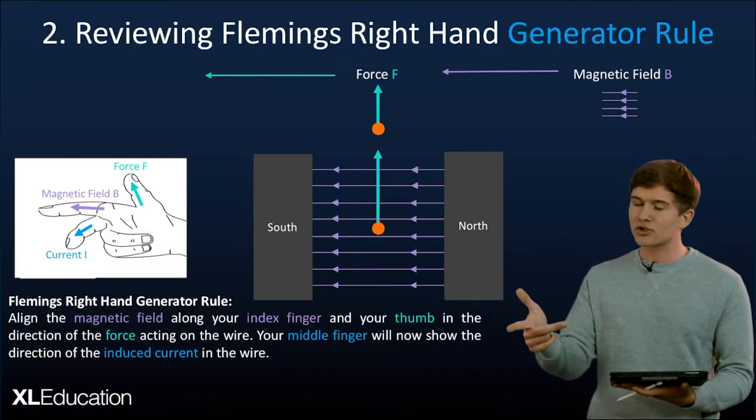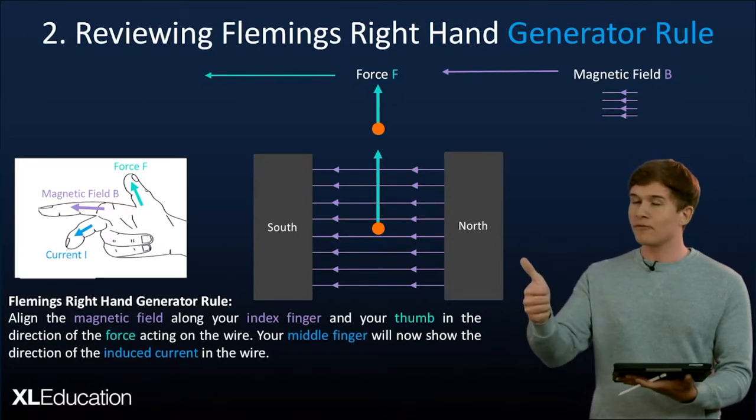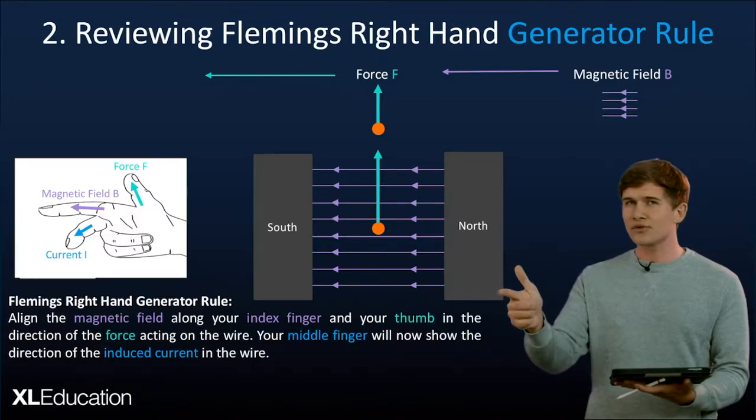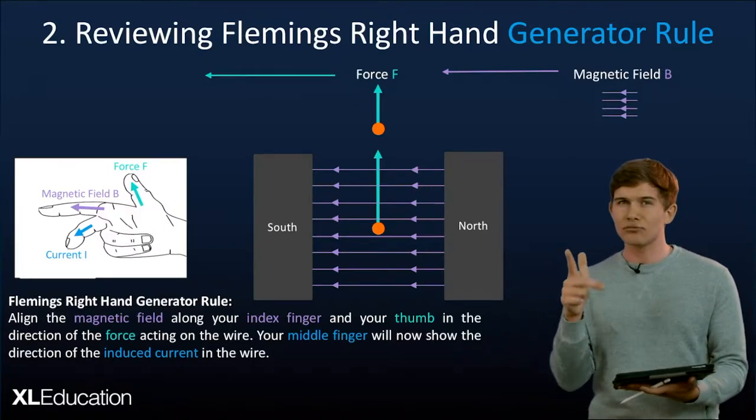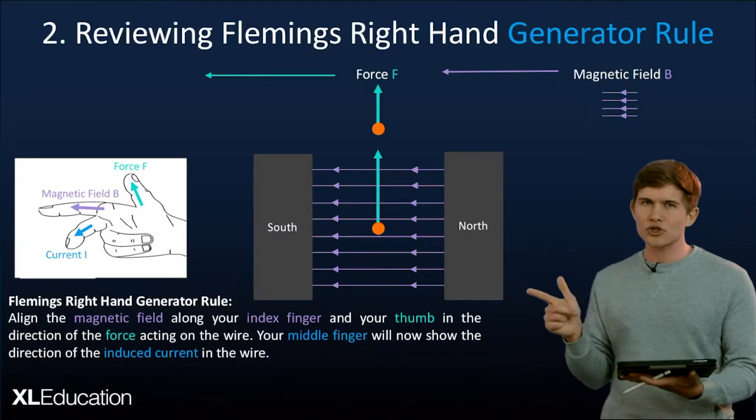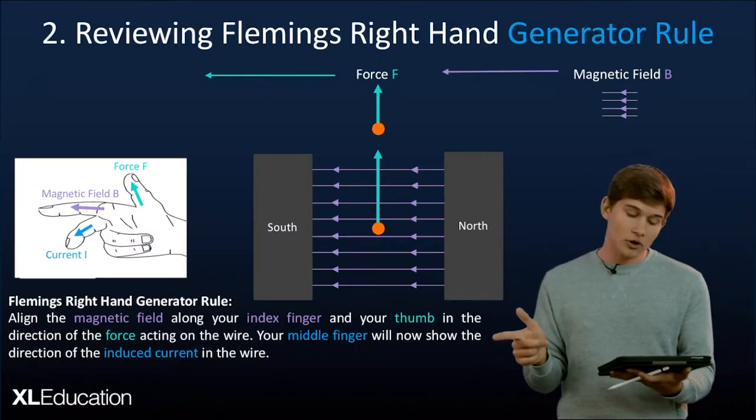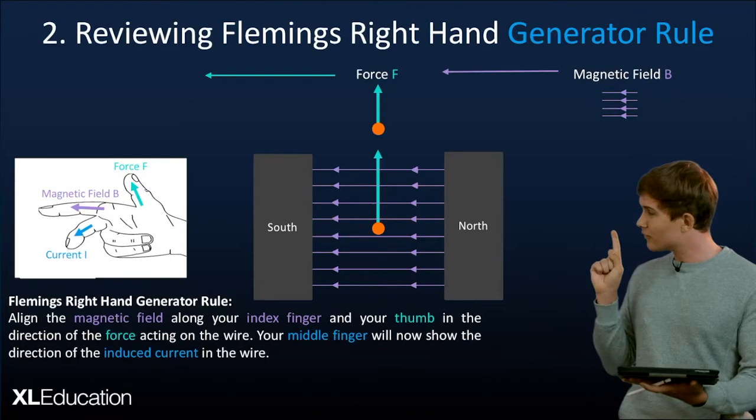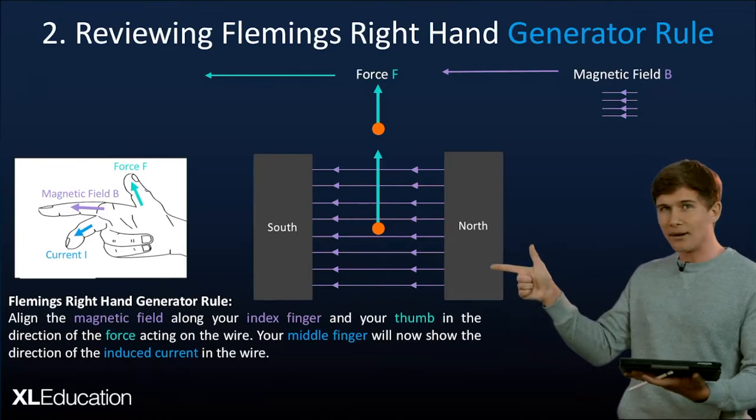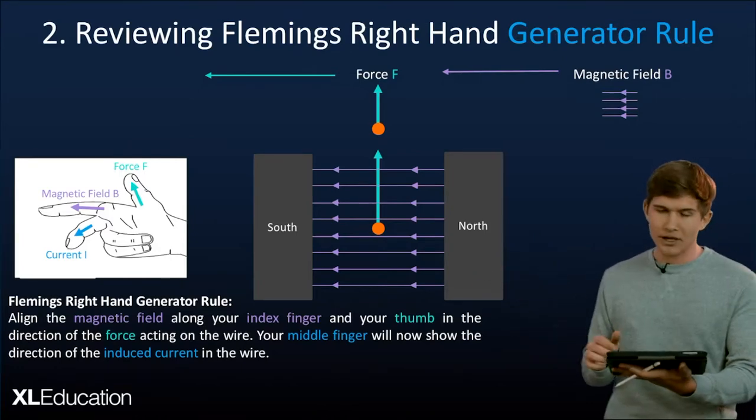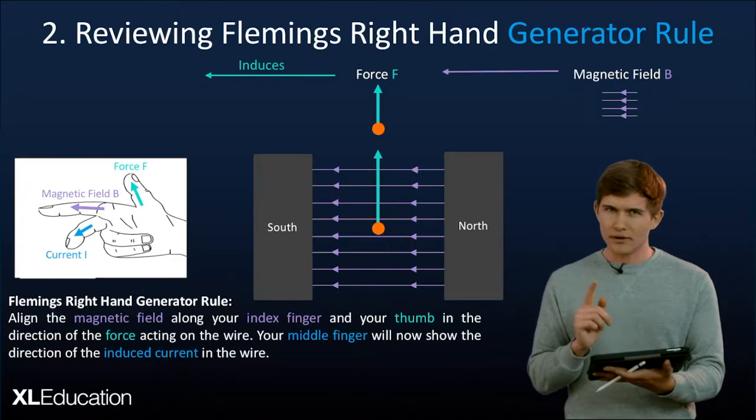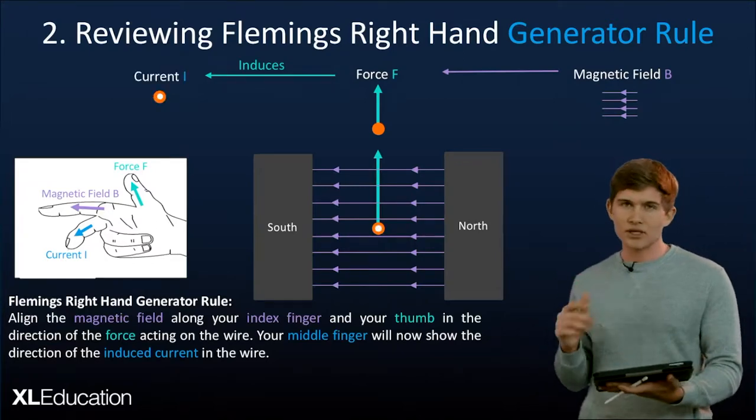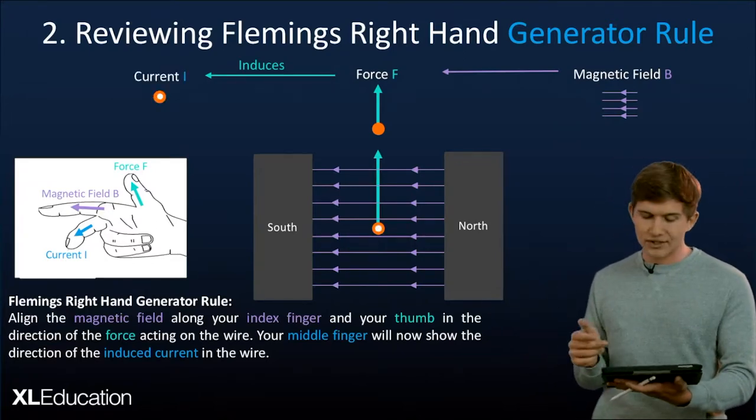If you place your fingers at opposite angles to each other like this and you remember that the force is for your thumb, the magnetic field is for your index finger and your current is shown by your middle finger and then you place them in the directions of each of the respective contributors in this case. So in this we have a magnetic field going across like this, our thumb pointing up, our current should be coming out of the page towards you. So the induced current that we induce is going to come out of the screen towards you as the dot shows.